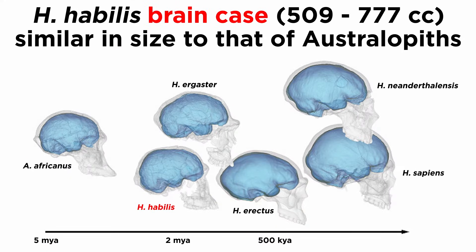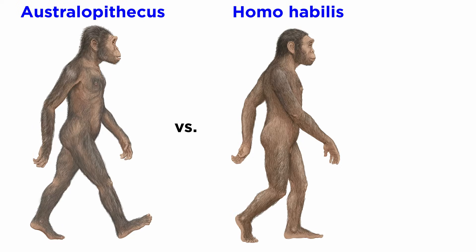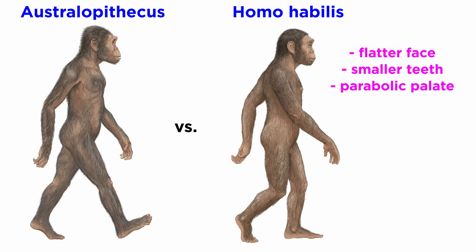Homo habilis is nothing to write home about in its brain case size, with the range dipping into what we see in the australopiths, at 509 to 777 cubic centimeters. It appears much more derived in its face and teeth, however. Homo habilis has a flatter face, smaller teeth, and a more parabolic palate than Australopithecus before it.